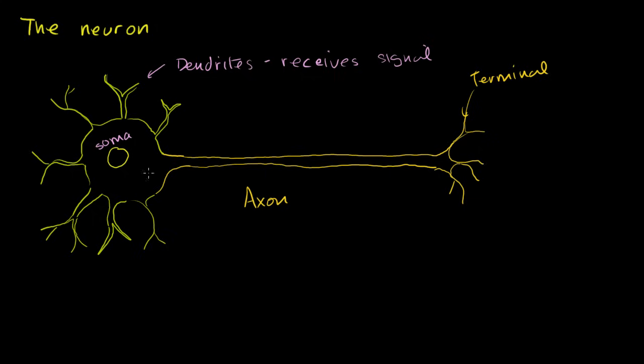And you'll sometimes hear the word, the point at which the soma, or the body of the neuron, connects to the axon, is often referred to as the axon hillock. Or maybe you can kind of view it as kind of a lump. It starts to form the axon. So it's the axon hillock.